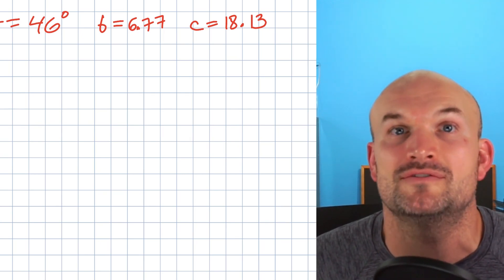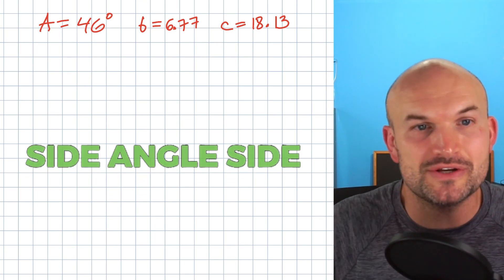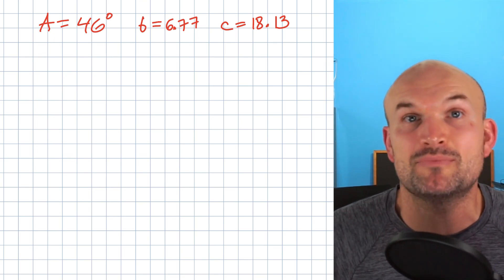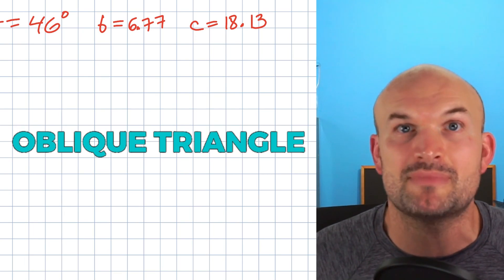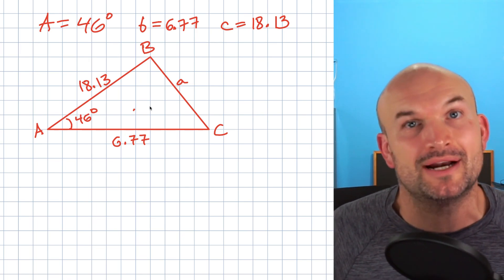We still have to be careful of the ambiguous case with the law of cosines, especially when we're dealing with a side angle side. So you can see in this example, I have A is 46 degrees, b is 6.77, and c is 18.13. First thing I always want to do is draw an oblique triangle to visually understand my triangle.